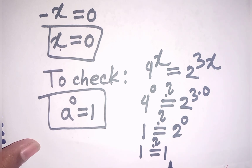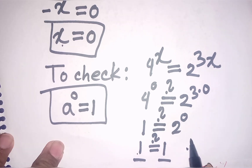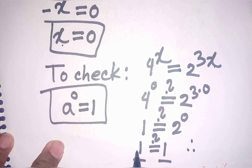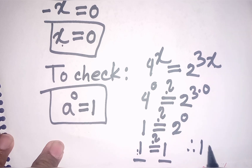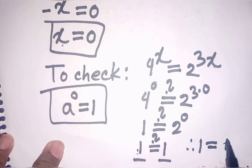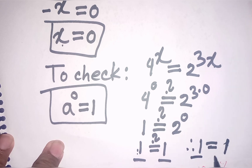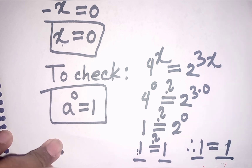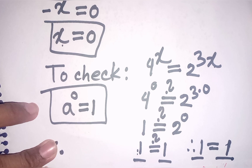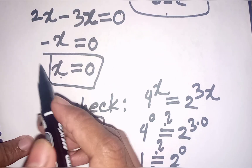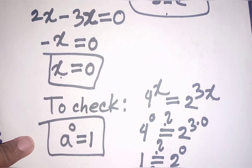So 1 is equal to 1. The left side equals the right side, confirming our correct and final answer: x is equal to 0.